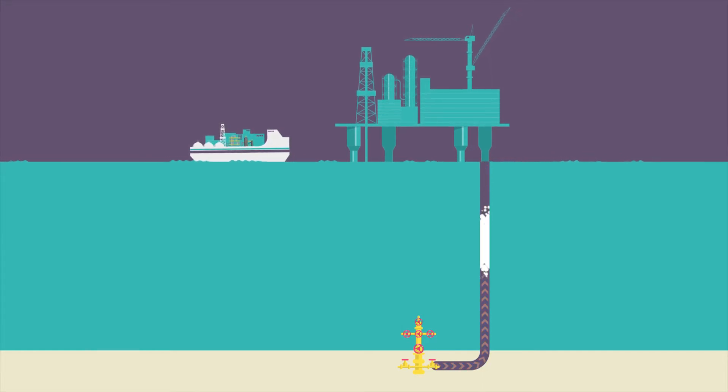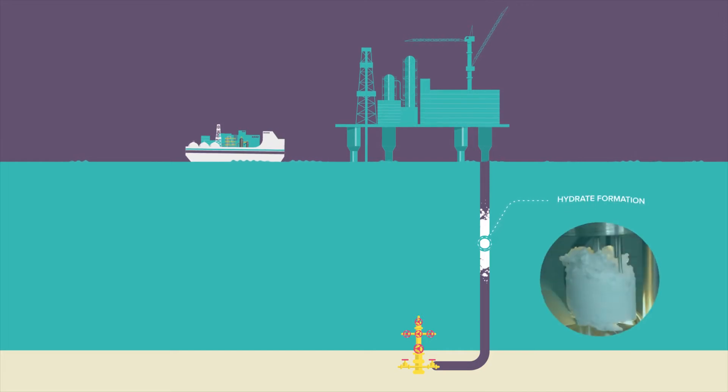Under these conditions, flow lines may be blocked due to a plug formation. When this happens, potential plant shutdowns may occur. This plug is called hydrates.